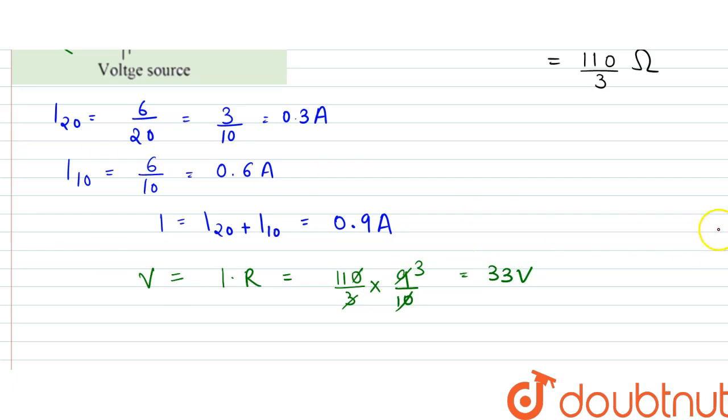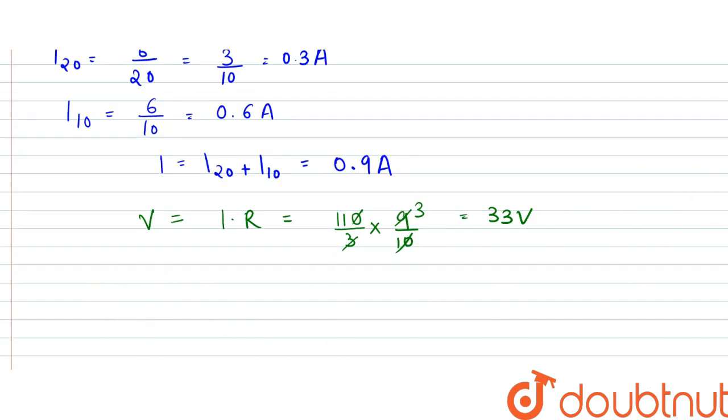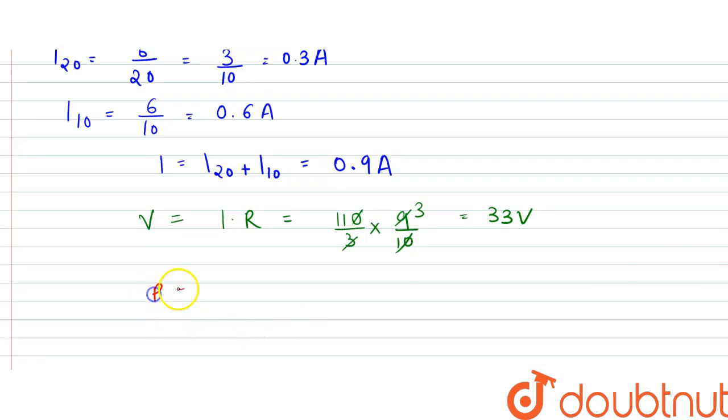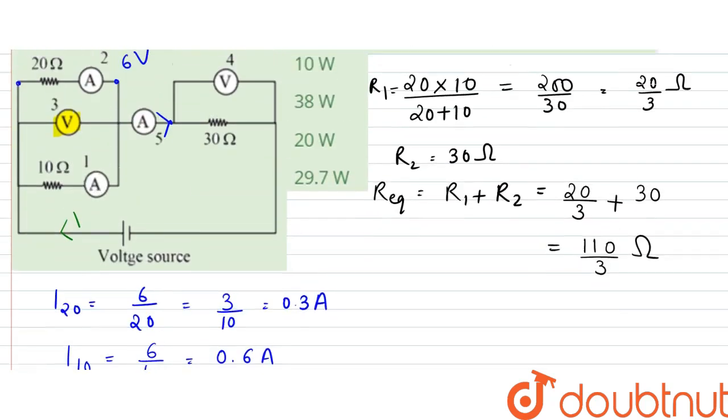So the voltage supply is 33 volts. Now what we have to find is the power supplied by the voltage source. Power is equal to I into V, which is equal to 0.9, that is 9 by 10 into 33, which can be written as 33 into 9 is 297, so it would be 29.7 watt.